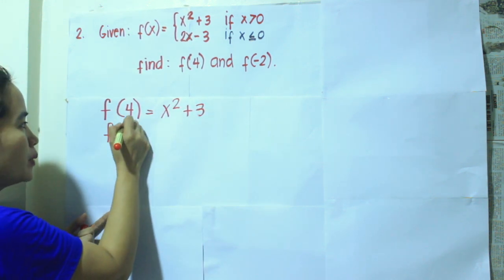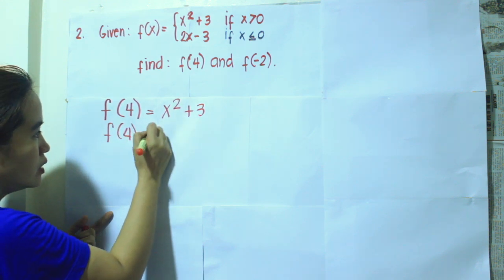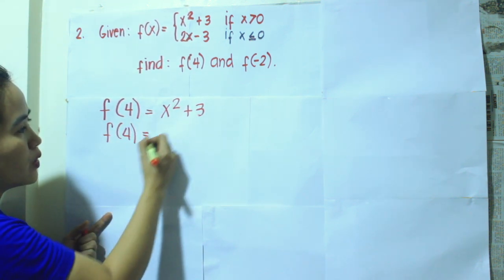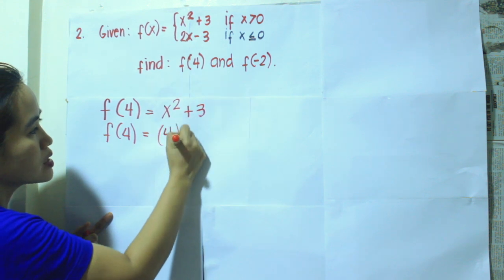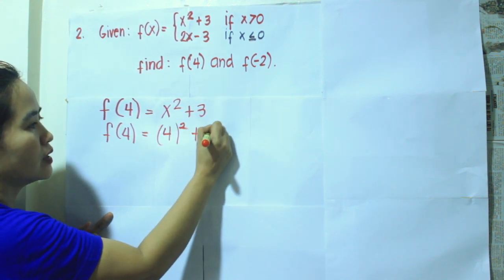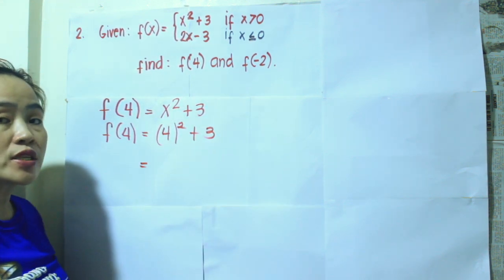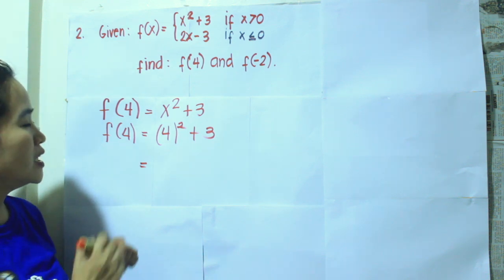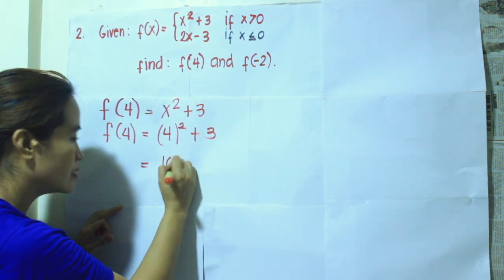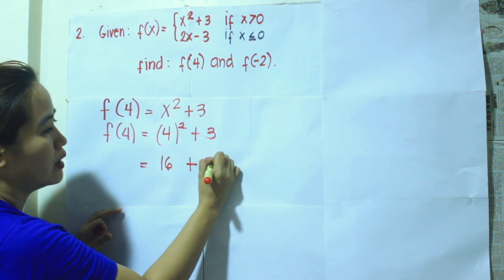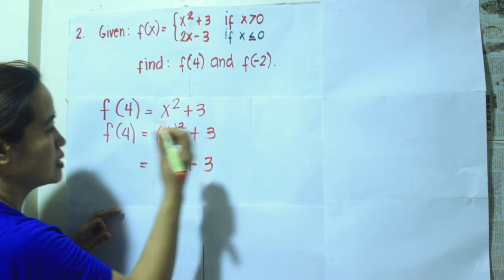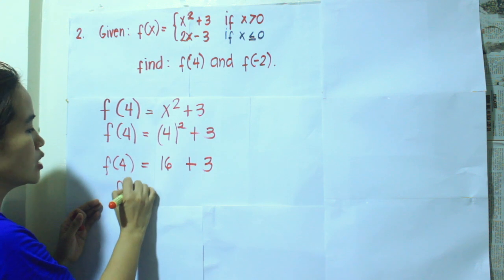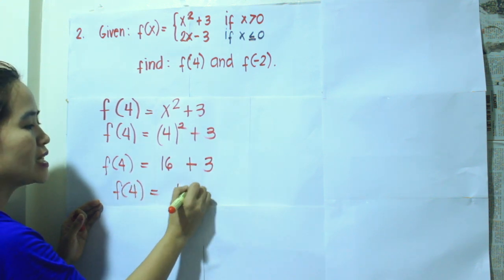When evaluating a function, replace all the x's by 4. So that is 4 squared plus 3. Since 4 squared is 16, that is 16 plus 3. Therefore, f of 4 is equal to 19.